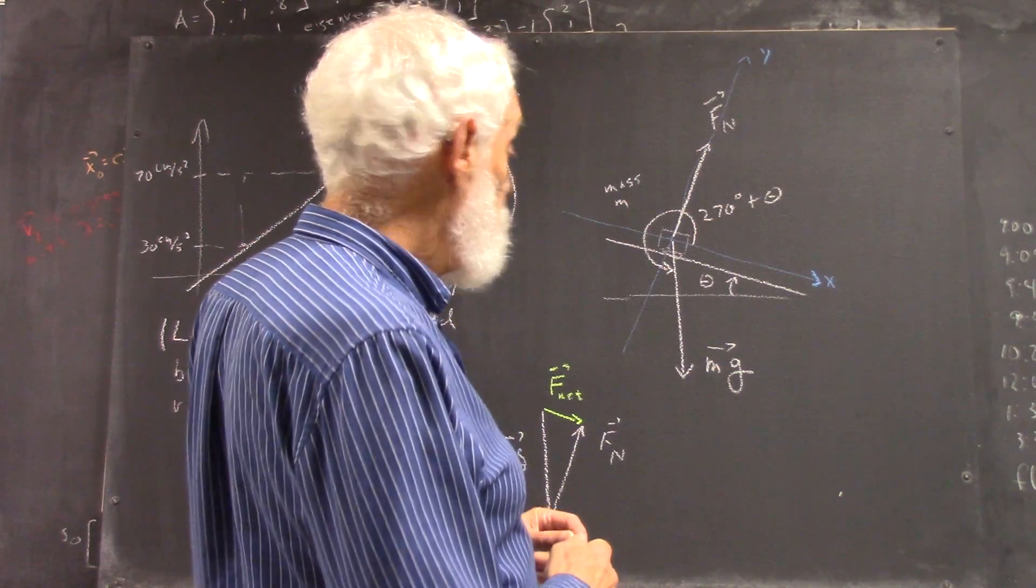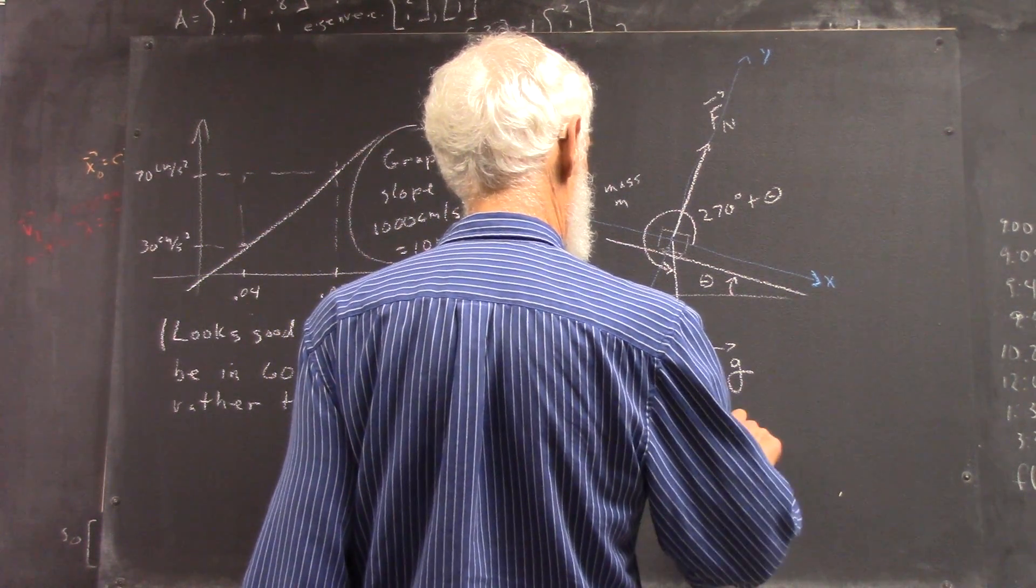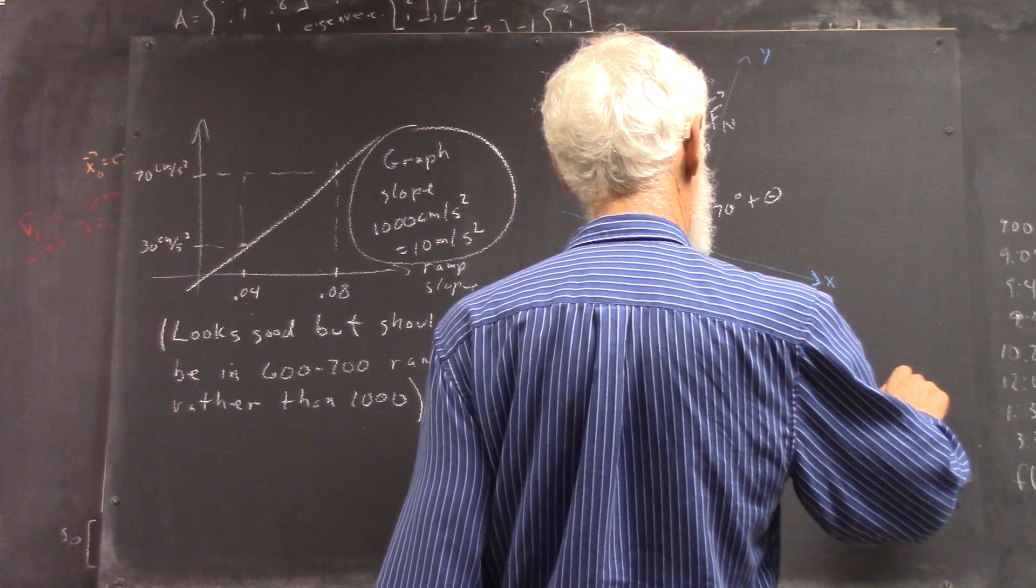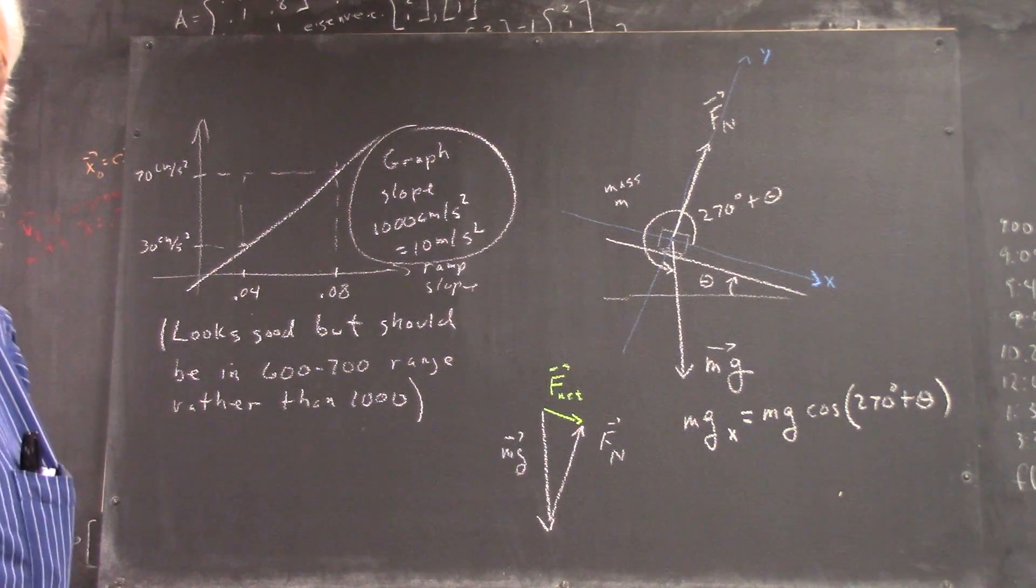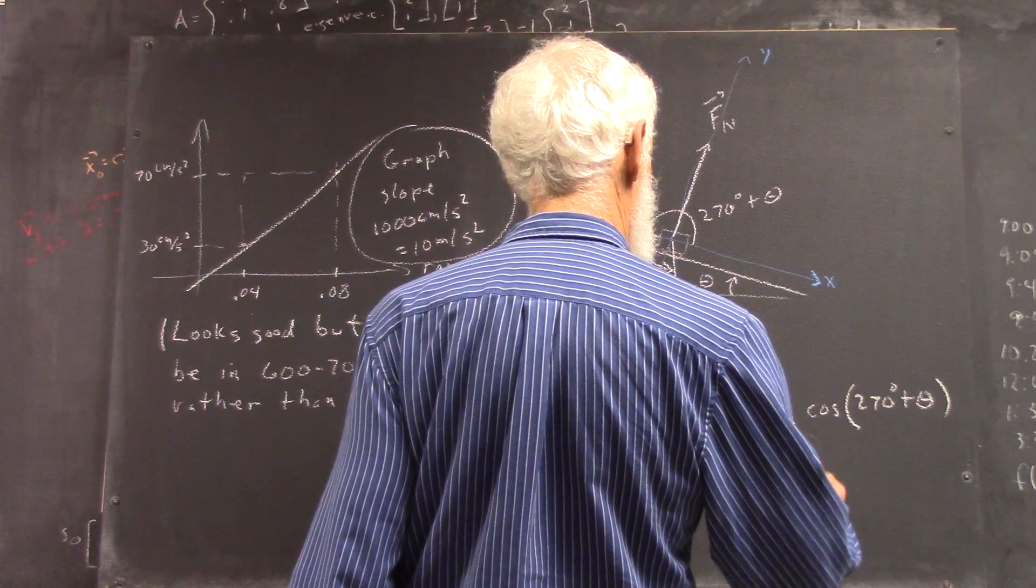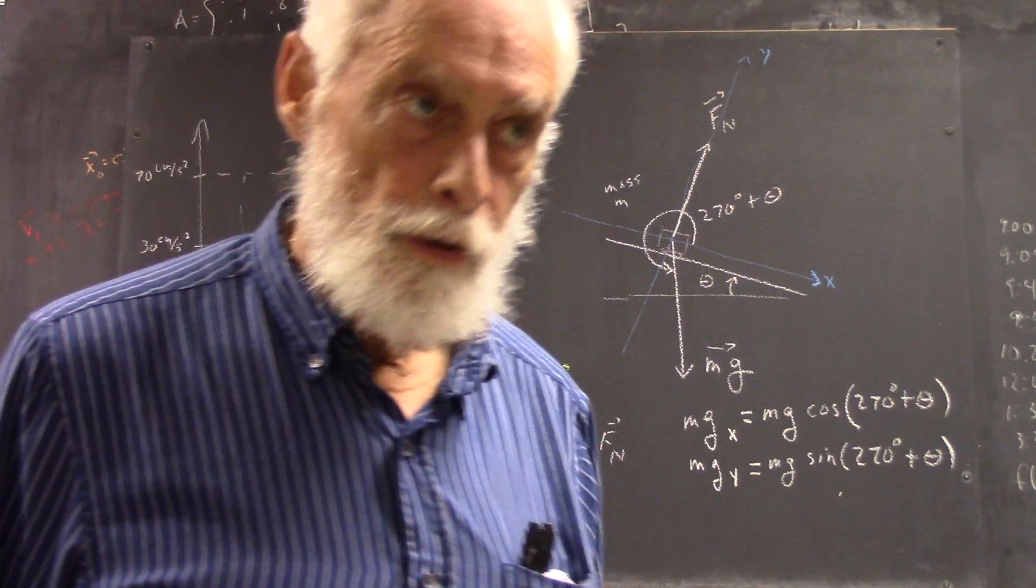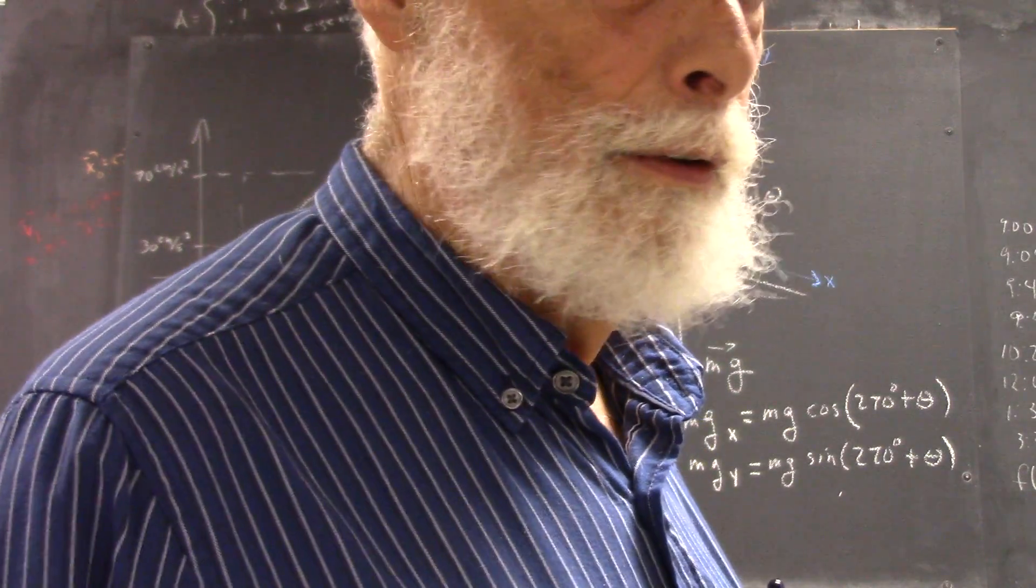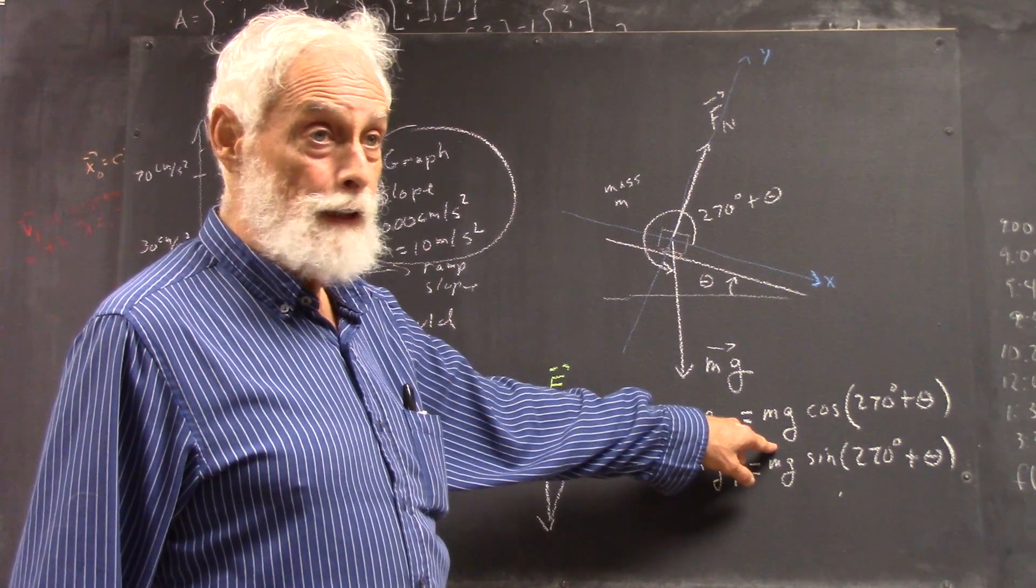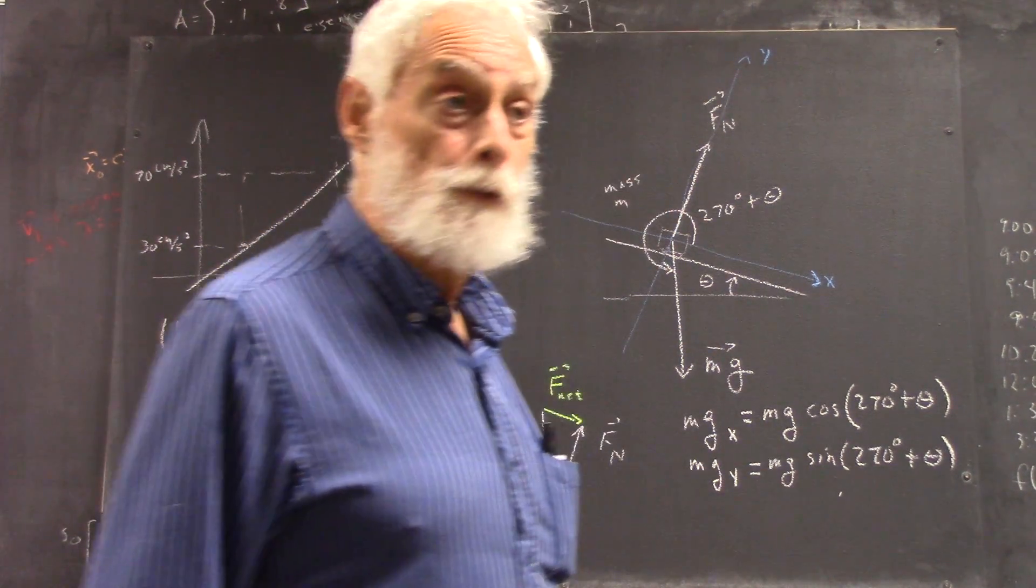Which means that without having to do any thinking, the x and y components of mg is mg times the cosine of 270 degrees plus theta. Direct result of circular definition of the trigonometric functions. Just ignoring right triangles. Right triangles are important. I have nothing against them. But you've got a more elegant model this way. And if you've had statics and used to doing it with right triangles, put that out of your mind for now. Check yourself with right triangles. I want you to use circular angles, circular definition.